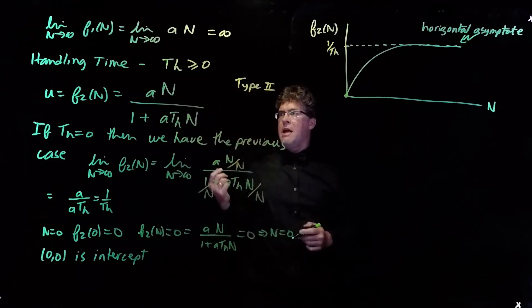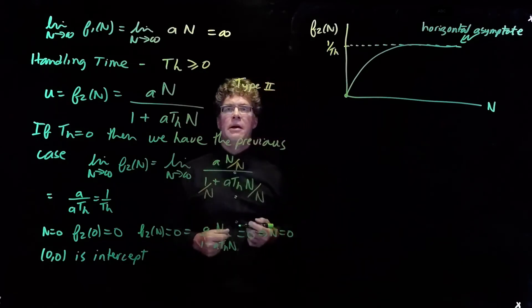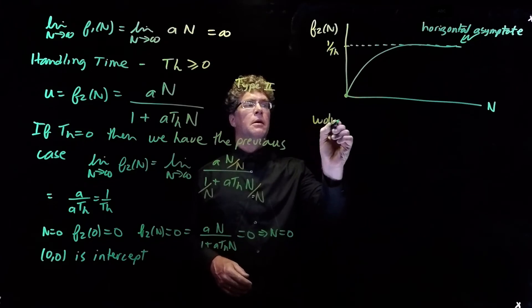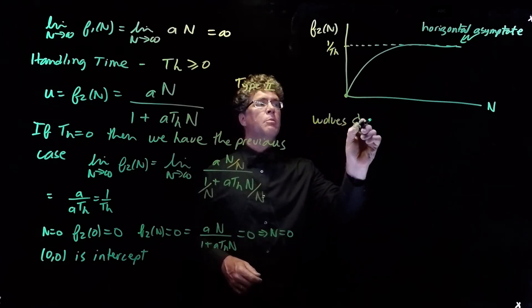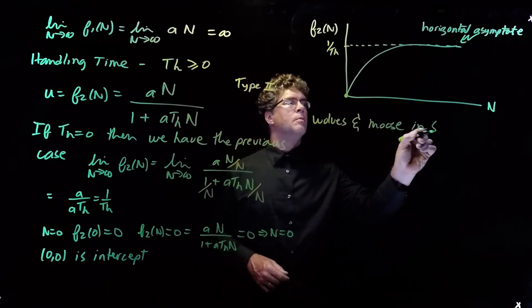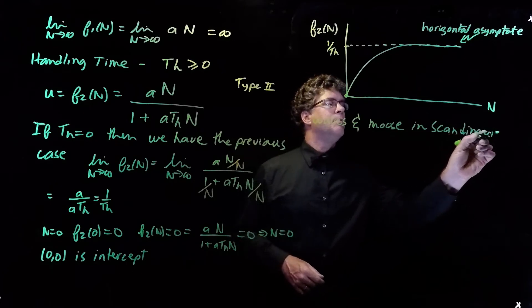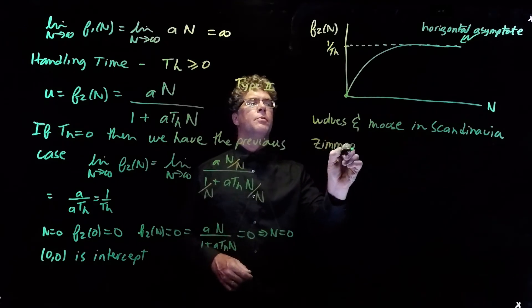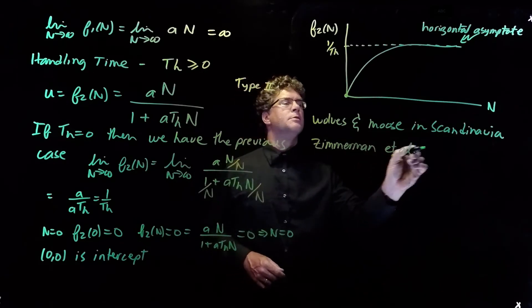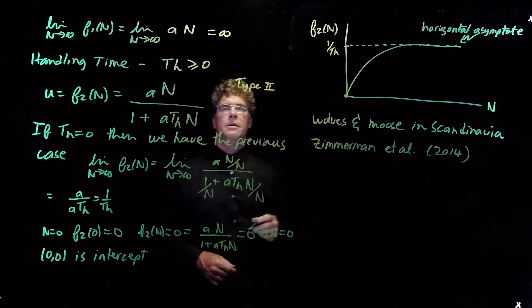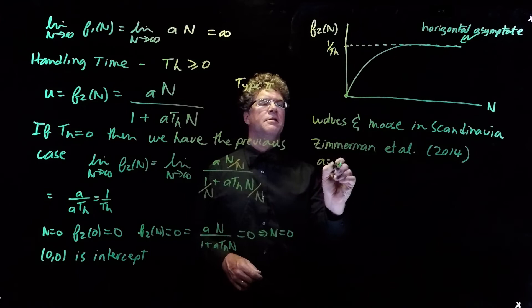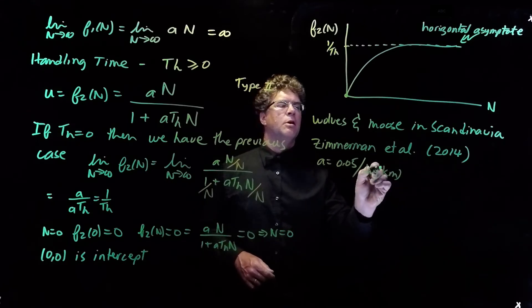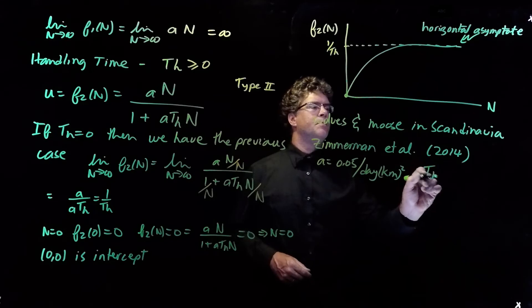So, the parameters A and T sub h are numbers, and for any given system, we can measure those numbers. And so, for wolves in Scandinavia and moose, these numbers were measured by an author called Zimmerman and their co-workers in 2014. And they calculated that A is 0.05. And the units are days times kilometers squared. And the handling time is 6 days.